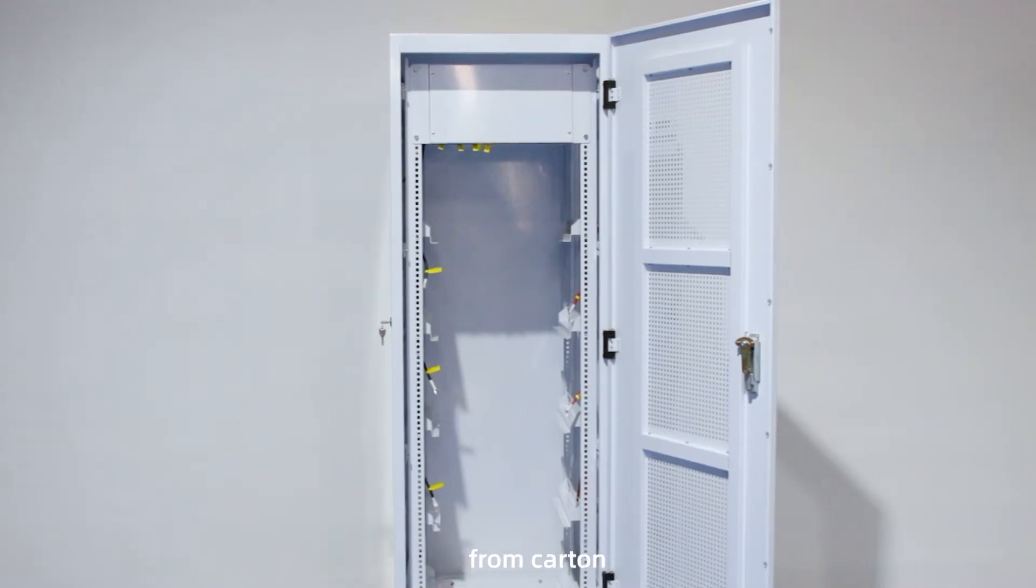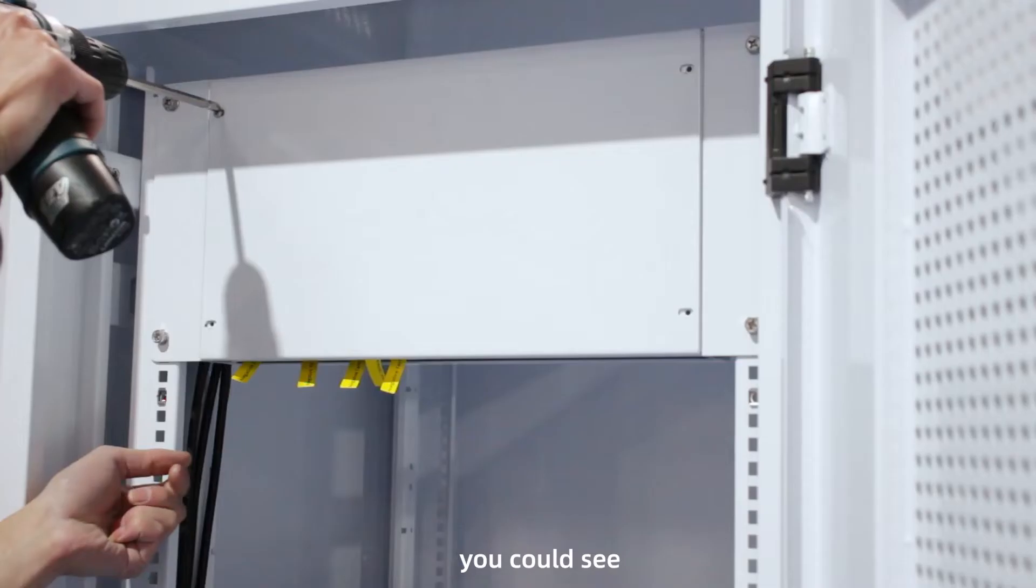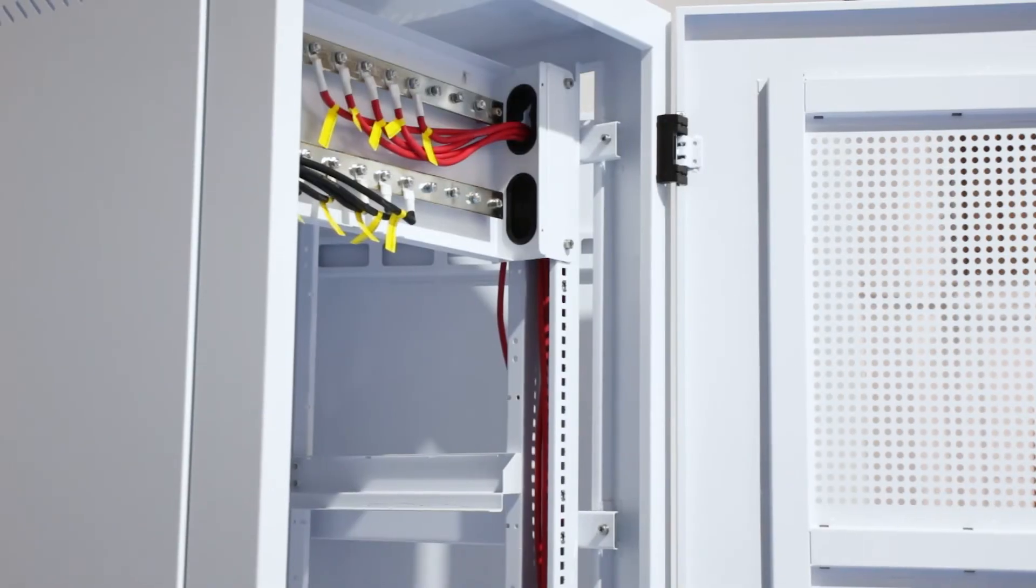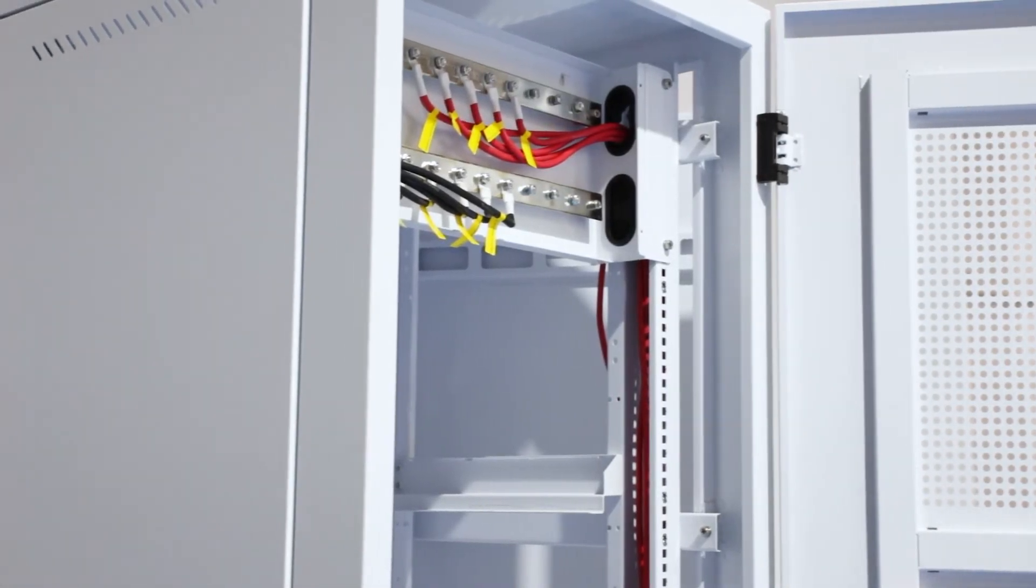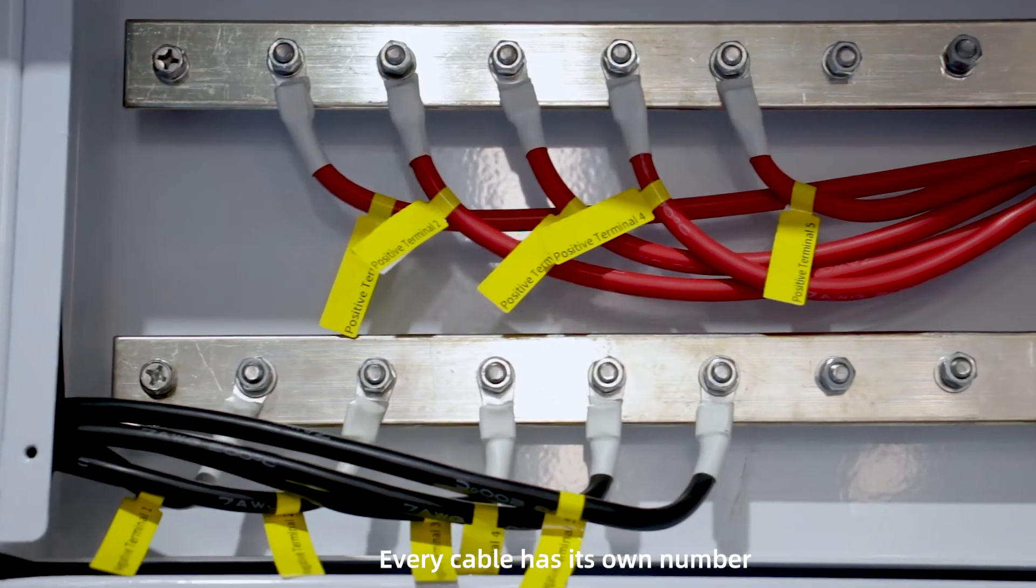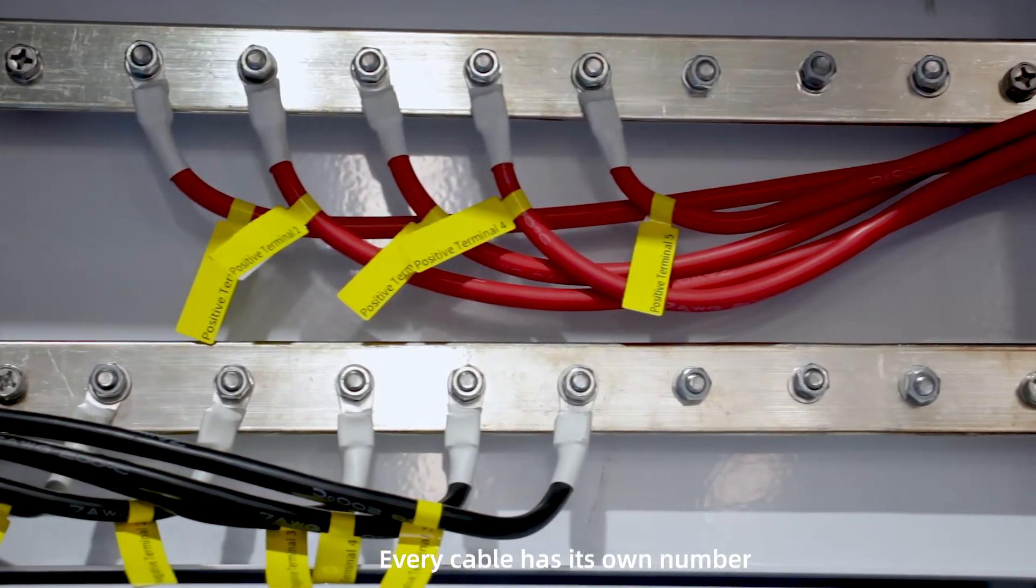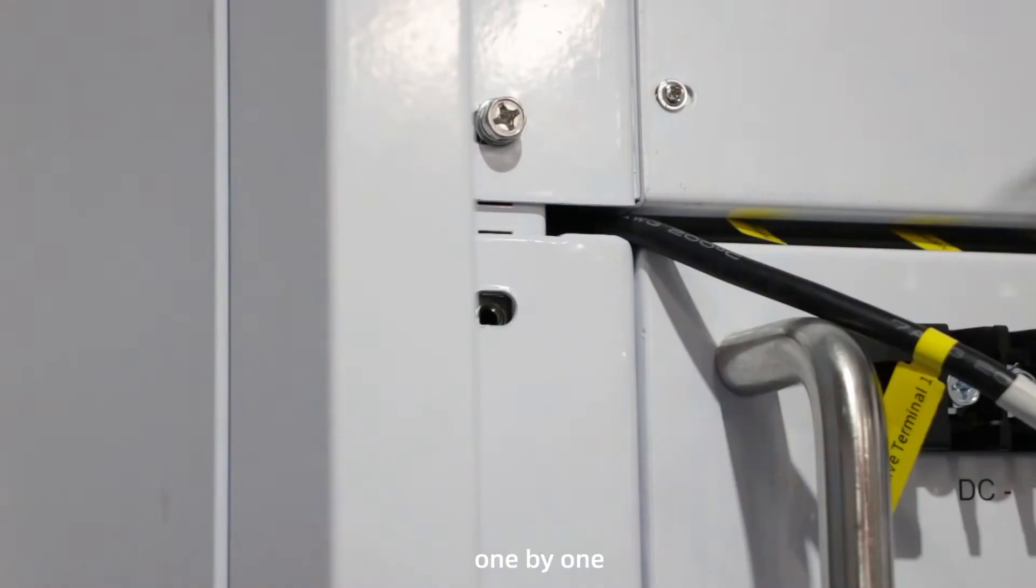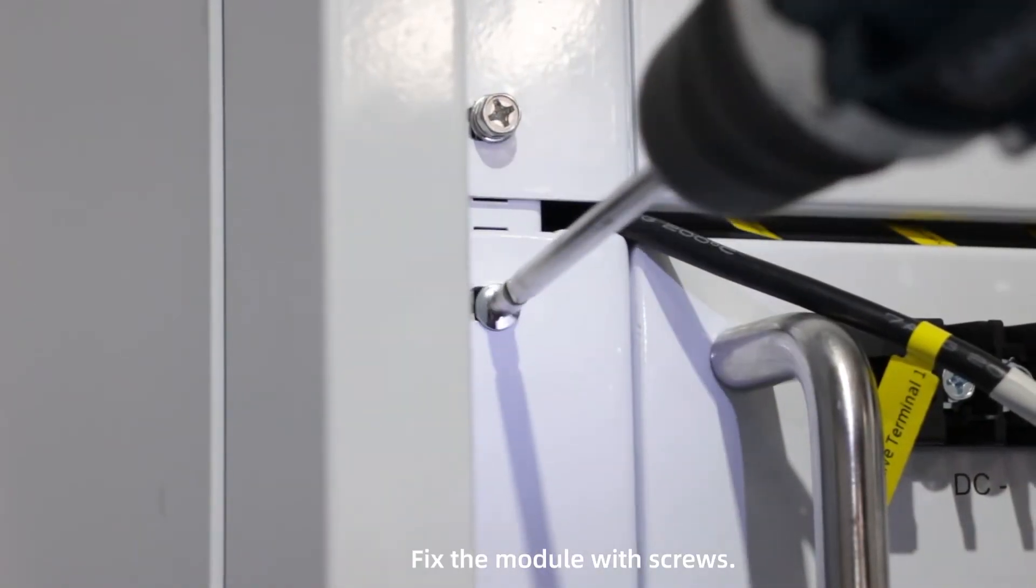When you take out the product from the carton, you can see the cabinet with cables together. Every cable has its own number. Then we put on the battery modules one by one and fix the modules with screws.